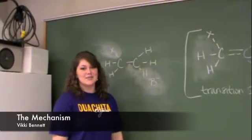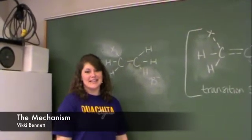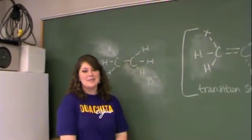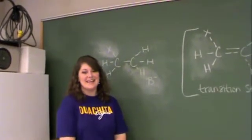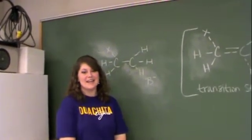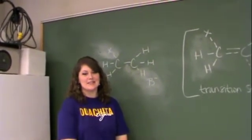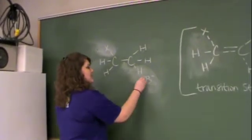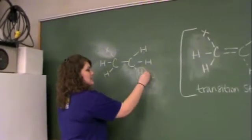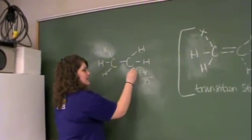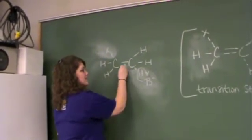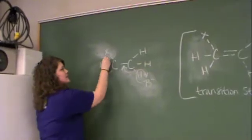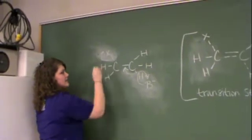In our candy transaction we showed the E2 mechanism. The chocolate represented the strong base, the pennies were the hydrogens, and the dime was the halide. As the strong base comes in, it removes the hydrogen, forming a double bond between the carbons, forcing out the halide.